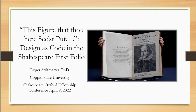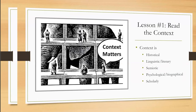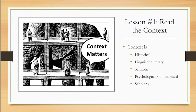Semiotics is the study of signs, and that includes both visual and verbal signs. Ultimately, both visual and verbal signs are code, and to understand them properly requires an investigation of their code-like attributes. I'm going to offer here four principles for consideration.